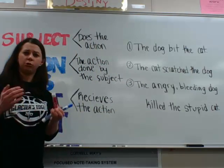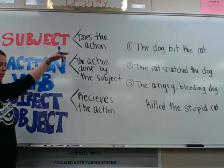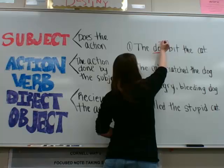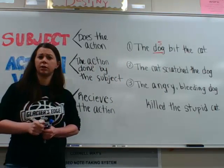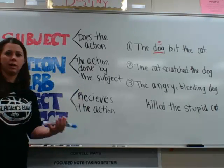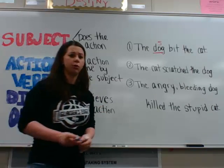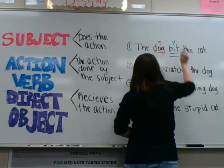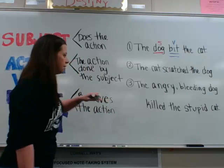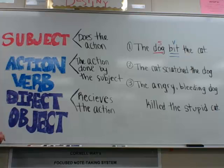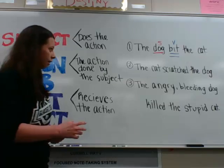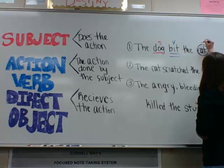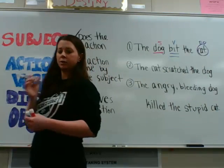Looking at the first sentence, 'The dog bit the cat,' we start with the subject — the subject does the action. What bit the cat? The dog did, so I underline that once and write an S above it. Then the action verb: what did the dog do? The dog bit, so I underline that twice and write a V above it. Finally, the direct object receives the action of the verb — what was bit by the dog? The cat. So cat is the direct object.